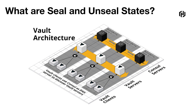Let's consider vault architecture in order to better understand this seal and unseal state. Here you can see what we usually define as a vault cluster, which usually comes with three or more vault nodes and some backend storage. Here the backend storage is defined by Consul. And if you're talking about Vault Enterprise, there is another option to consider as backend storage: integrated Raft storage.